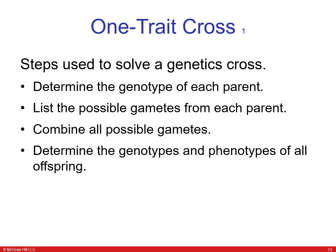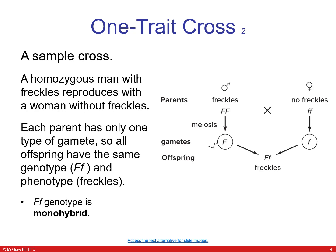Here are the steps to solve a genetics cross: determine the genotype of each parent, list the possible gametes from each parent, then combine all possible gametes to determine the genotypes and phenotypes of all offspring. In a sample cross, a homozygous man with freckles reproduces with a woman without freckles. Each parent has only one type of gamete, so all offspring have the same genotype and phenotype.